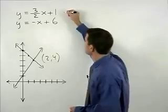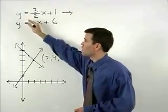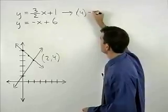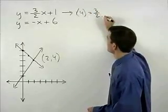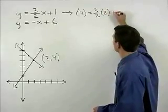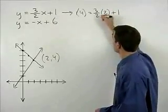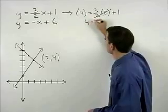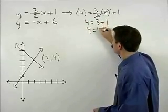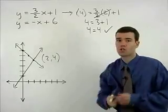For our first equation, y is 4 equals 3 halves times x, which is 2, plus 1. The 2's cancel. We have 4 equals 3 plus 1. So 4 equals 4. And our first equation checks.